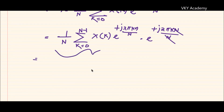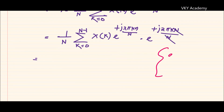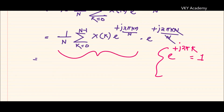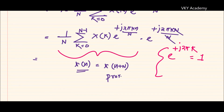Now we know this particular result is the formula for IDFT. We discussed earlier that e to the power plus j two pi k is always equal to 1. So I can write this part is my x(n), and x(n + N) equals x(n), hence it is proved. By these two methods we can prove the periodicity property of the Discrete Fourier Transform. We will discuss the circular time shift property in the next class. Thank you.